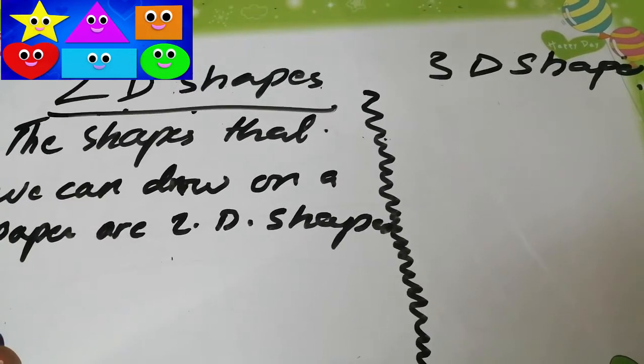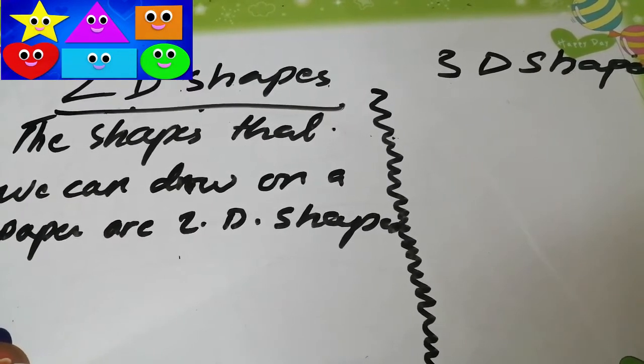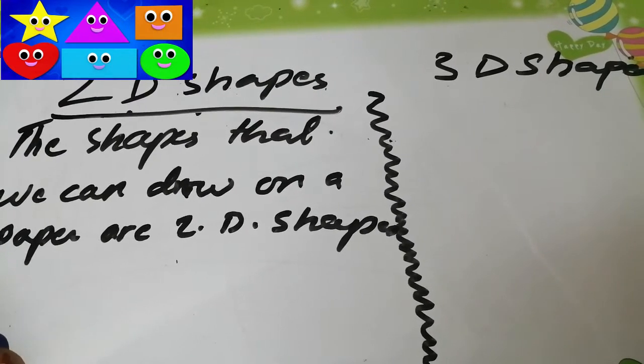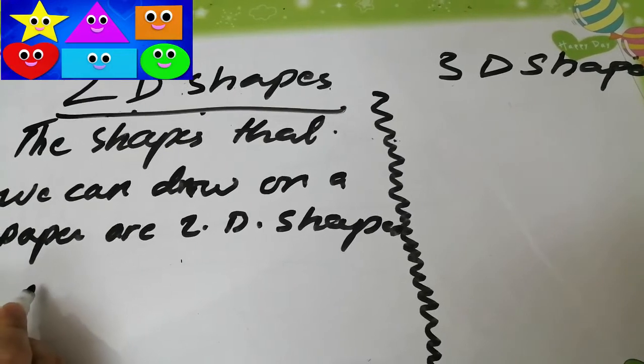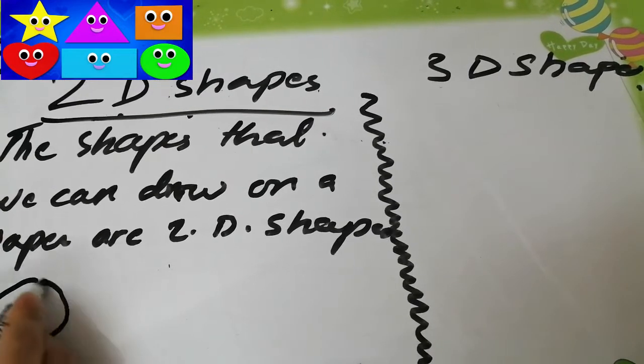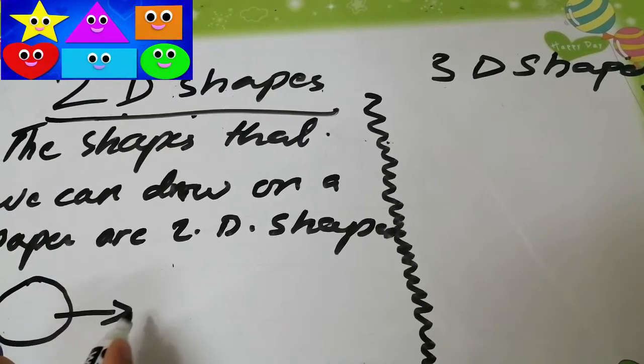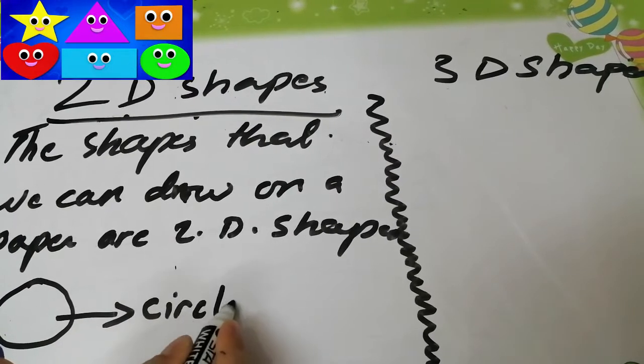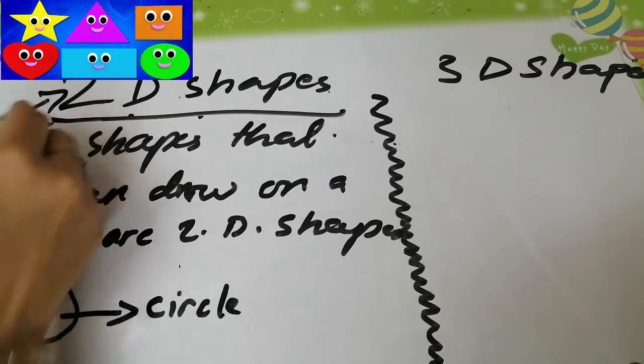Okay, what shape can you draw on a paper? Yes, anybody wants to tell me? Very good. Valid, you give me the answer that you can draw circles on the paper. That's very correct. We can draw a circle on a paper. So it means that circle is a 2D shape.